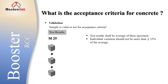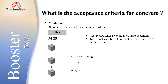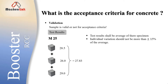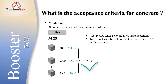For example, we use M25 grade of concrete in construction. Let's say strength of specimen one is 28.5 MPa, second is 26 MPa, and third is 29 MPa. The average of these three specimens is 27.83 MPa. The individual variations are 2.4%, minus 6.57%, and 4.20% respectively — all within 15%, so this sample is valid for acceptance criteria.